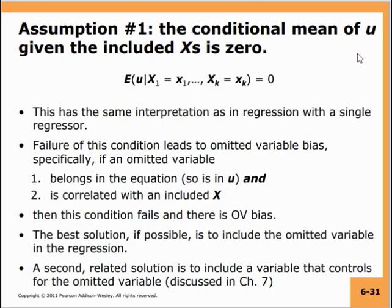The first assumption — the conditional mean of u given the included x's is zero — has the same interpretation as in regression with a single regressor. Failure of this condition leads to omitted variable bias. If the expected value of u given the included variables is not zero, then u is correlated with some of the included variables, meaning you may have missed out on some variable that should be included.